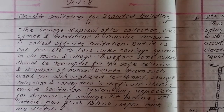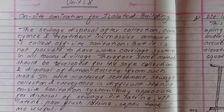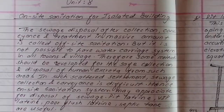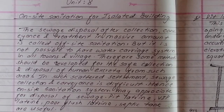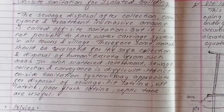The sewage disposal after collection, conveyance, and treatment in massive amounts is called on-site sanitation. But it is not possible to have a water carriage system in all towns and villages. Therefore, some methods will be developed for the safe collection and disposal of human excreta from such areas. In such scattered settlements, sewage collection and conveyance is difficult. Hence, on-site sanitation systems may be appropriate for disposal of sewage.